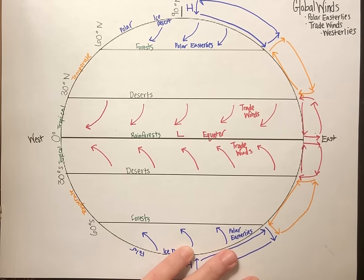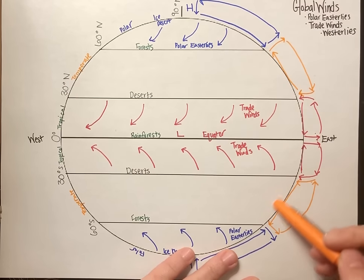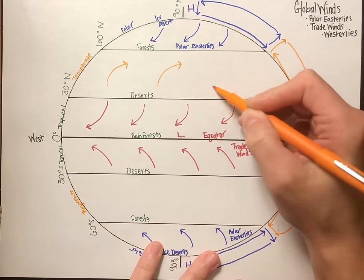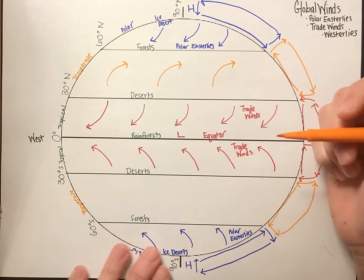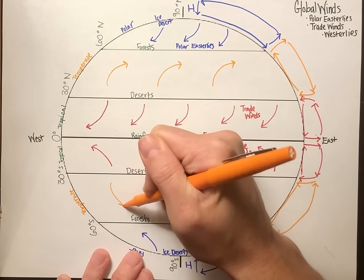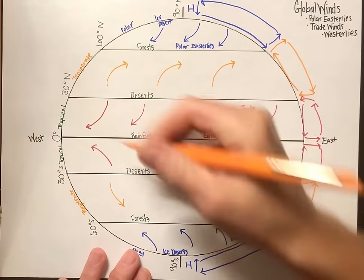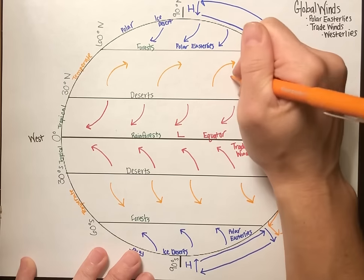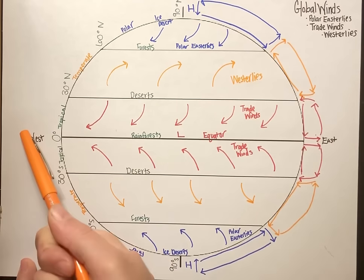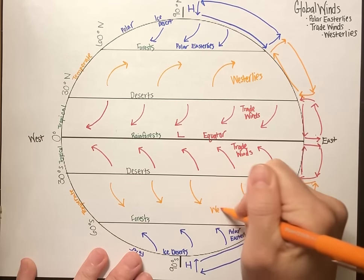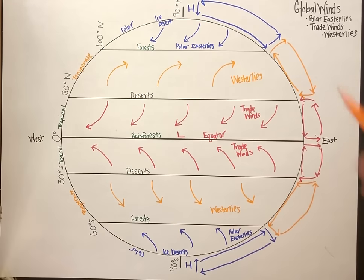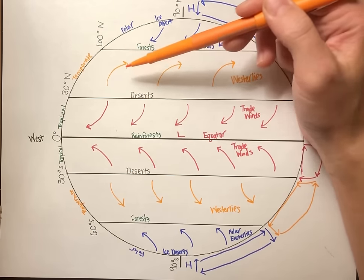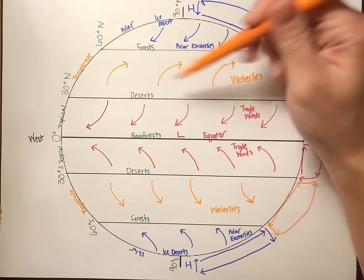The last global wind is our westerlies — the oddballs again, moving north and south. In the Northern Hemisphere they get turned to the right, and in the Southern Hemisphere they get turned to the left. These are known as westerlies because they come from the west and travel east. In the United States, westerlies make the weather go from the west coast to the east side. Westerlies are very influential in our weather patterns in the United States.